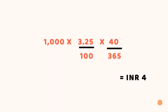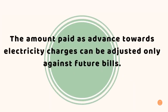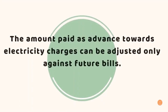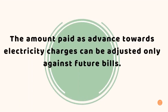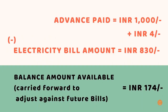The amount arrived at is the interest on the advance payment. Remember that both the amount paid as advance towards electricity charges and the interest credited can only be adjusted against future electricity bills. As per this example, the advance of INR 1000 is added to INR 4 (the interest), and from this the electricity bill amount of INR 830 is deducted, arriving at INR 174 as the balance amount available, which will then be carried forward to adjust against future bills.